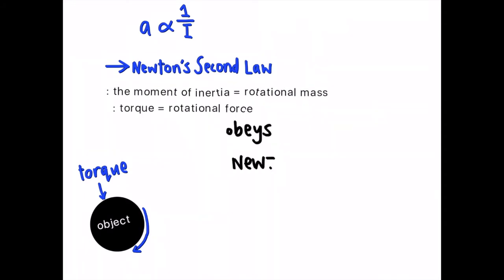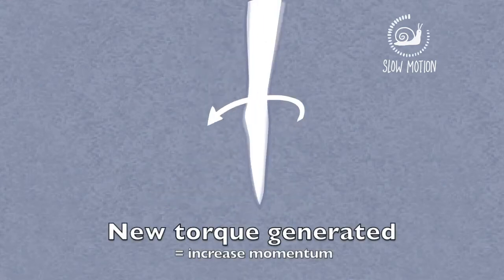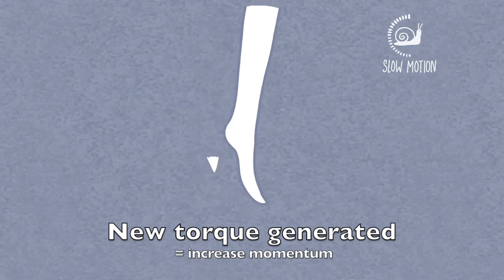Angular motion obeys Newton's first law of motion. In between each turn, when a dancer faces the audience for a split second, the foot flattens and generates a tiny amount of torque to increase the momentum on each turn.